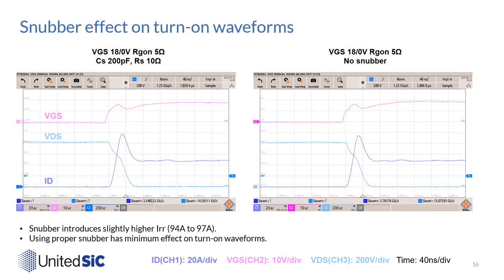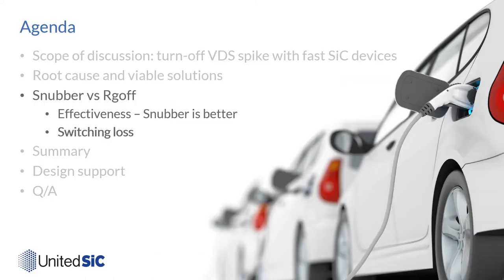Here is the comparison on the turn-on side. The left waveform uses snubber with 5 ohm RG on; the right uses 5 ohm RG on without snubber. We can see that using snubber slightly increases reverse recovery current from 94A to 97A, but snubber has negligible effect on the turn-on waveforms. By far, we already know snubber is more effective than high RG off in controlling turn-off VDS spike and ringing duration. But will snubber also be more efficient?